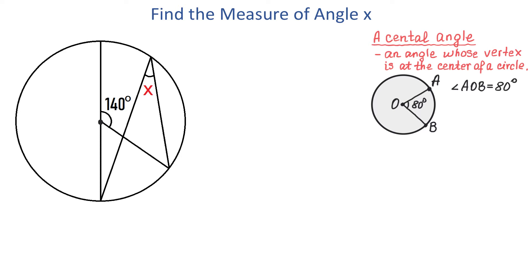Now if this is the angle AOB then this is the arc AB. And here we have the following rule. A central angle is equal to its intercepted arc. This means that if the measure of this angle is 80 degrees then the measure of this arc is also 80 degrees. And we write that the measure of the arc AB is also 80 degrees.